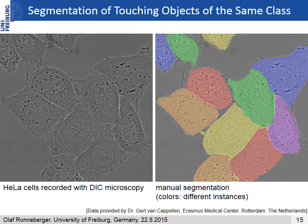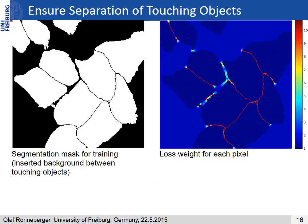The second challenge is touching objects of the same class that have to be correctly separated. Here we insert background pixels between all touching objects and assign an individual loss weight to every pixel. This allows a strong penalization if the network accidentally closes these gaps.